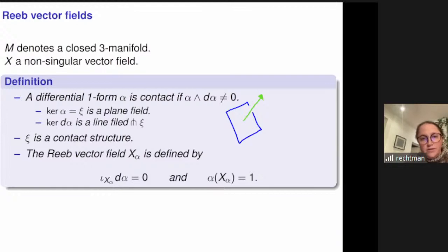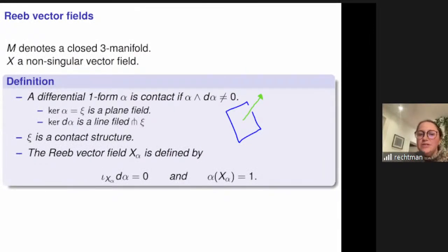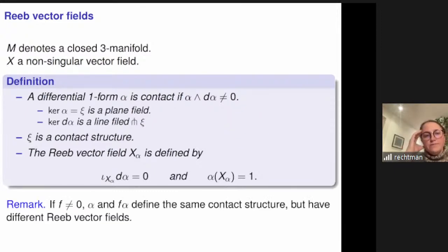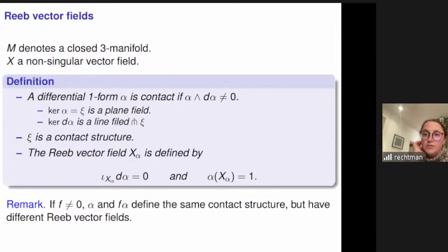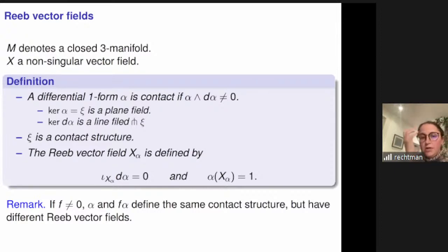There is a very important difference in this talk between contact forms and contact structures, and the reason is that I'm interested in Reeb vector fields. If you have a contact structure, you have many contact forms that define it — you can take one contact form whose kernel is your contact structure, multiply by any non-zero function, and get another one-form defining the same contact structure. The kernel hasn't changed but the Reeb vector field changes drastically, not only in size but in direction. So we're talking about contact forms and Reeb vector fields, not really about contact structures today.